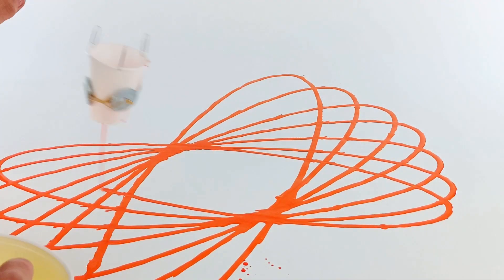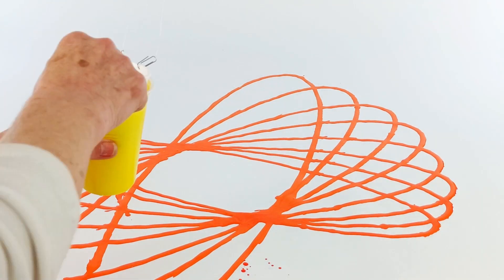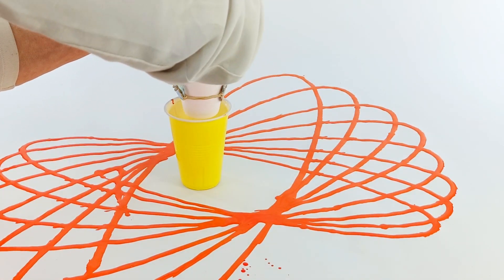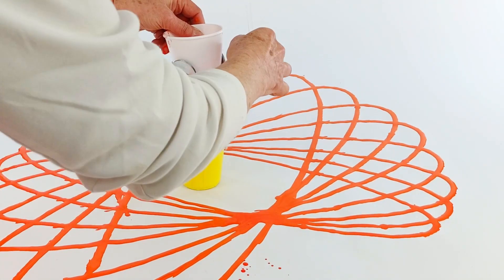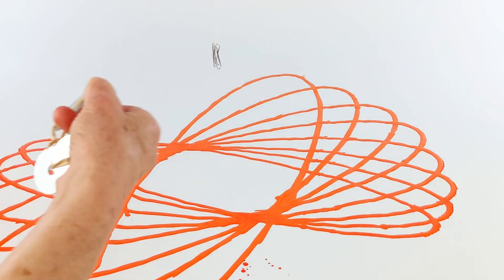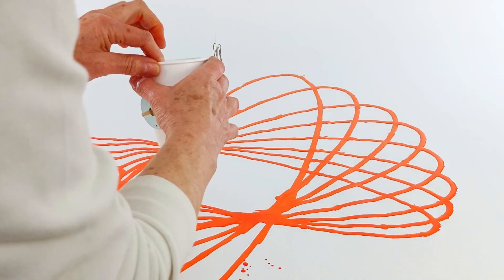Now as you can see this could be a very messy activity. We did ours indoors however definitely recommend with kids that it might be easier to do this outside. When you're switching your cups we've done ours here so that you can kind of see on camera what we're doing. It may be easier to do it off camera to make sure that you don't accidentally damage your new paint designs that you've just put on the paper.